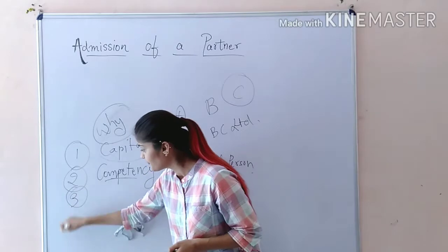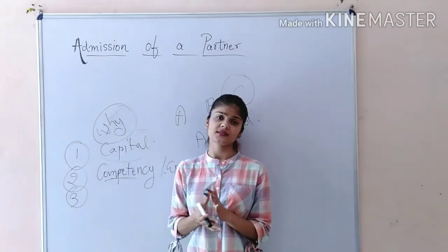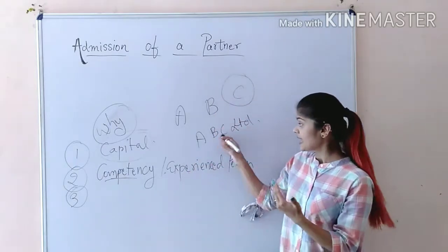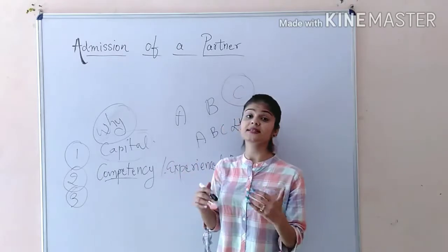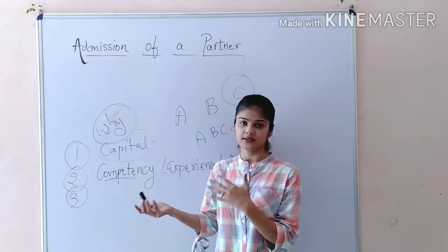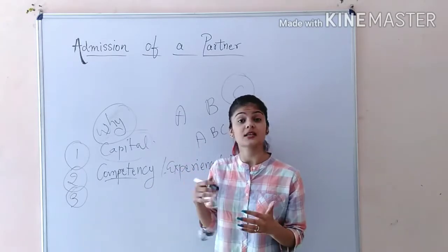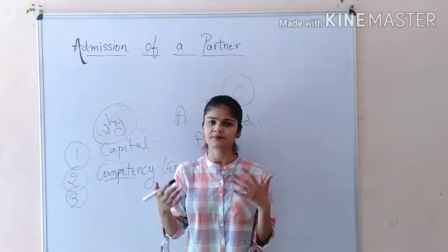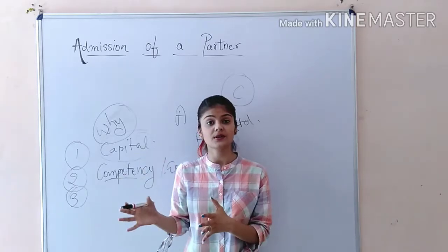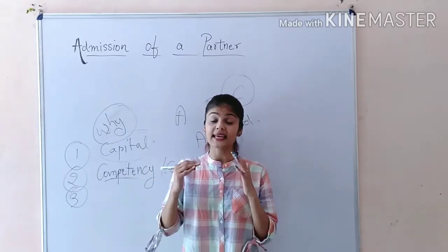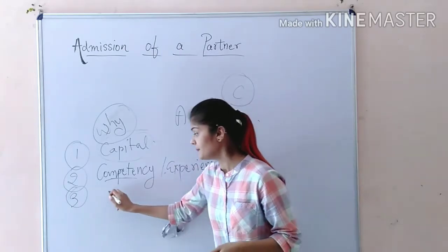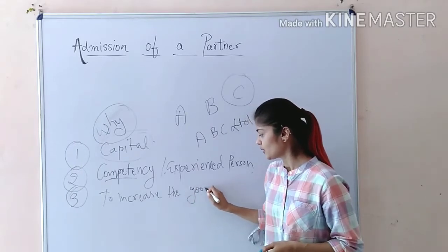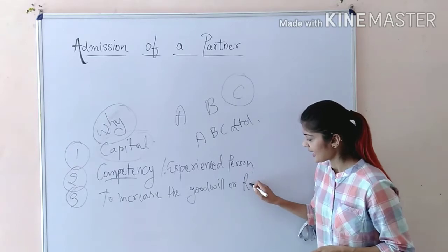The third reason can be goodwill of the firm. Suppose A and B want the goodwill of their company ABC Limited to be increased — they want to increase the reputation of their business. They might ask a person who is more reputed in their town. For example, A and B living in country XYZ decided to enter a renowned, reputed person into their partnership so that they can increase the goodwill of their business. So the reason can be to increase the goodwill or reputation.